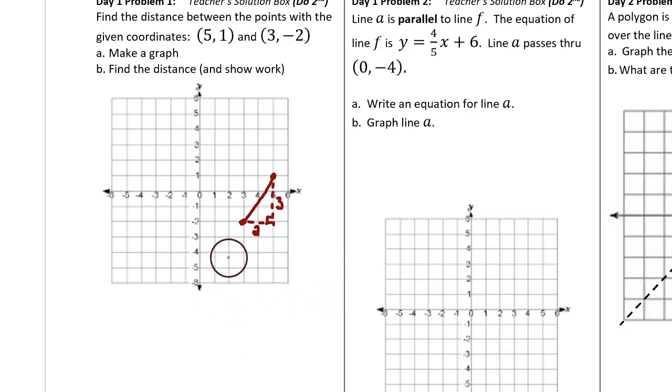We can use the Pythagorean Theorem. 2 squared plus 3 squared equals c squared, where we're letting the letter c be the diagonal distance we're trying to find.